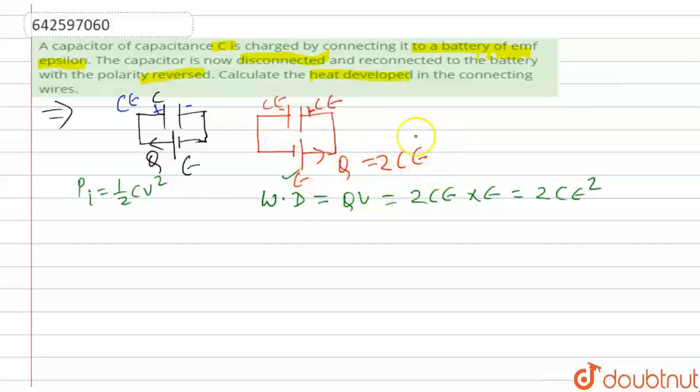So all the work done that is being done here, it might have gone somewhere. So where has the energy gone? It means whole energy has been gone to heat developed. So the heat developed here, the total work done by the battery has been developed as heat energy, that is 2C epsilon square. So this is the correct answer. Hope you understand.